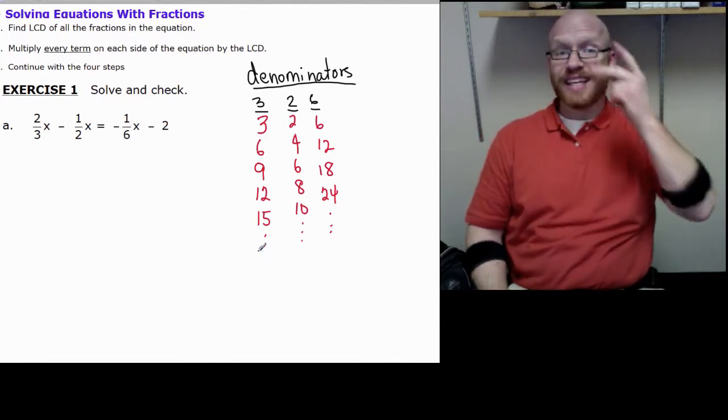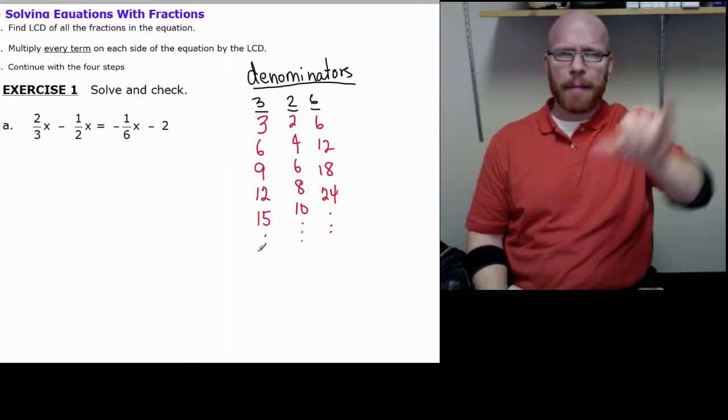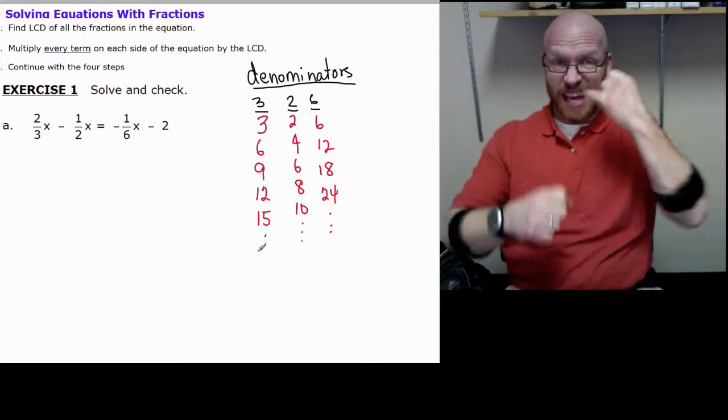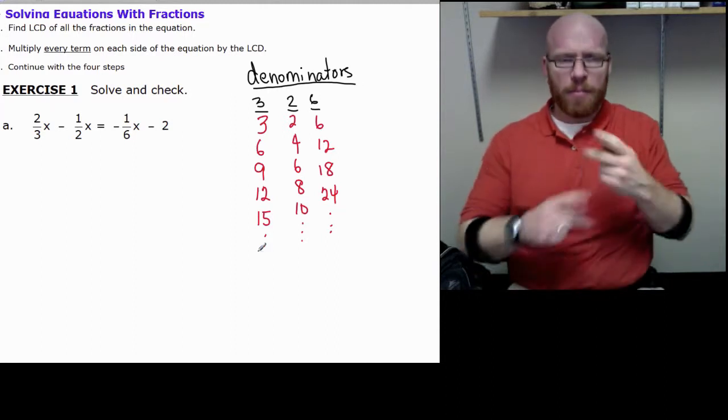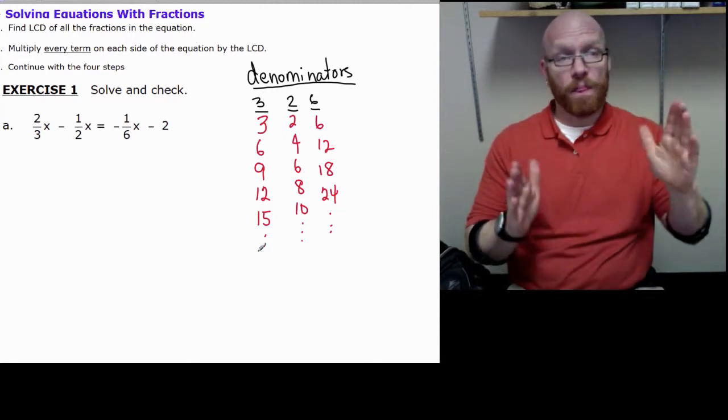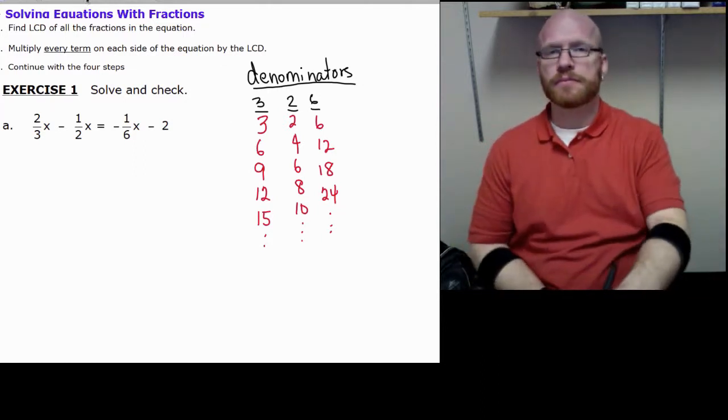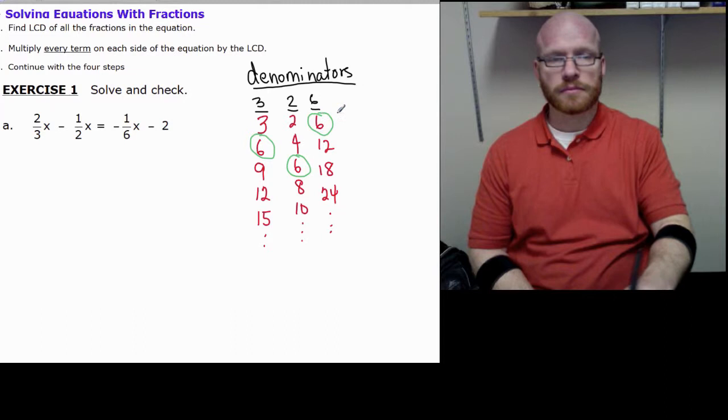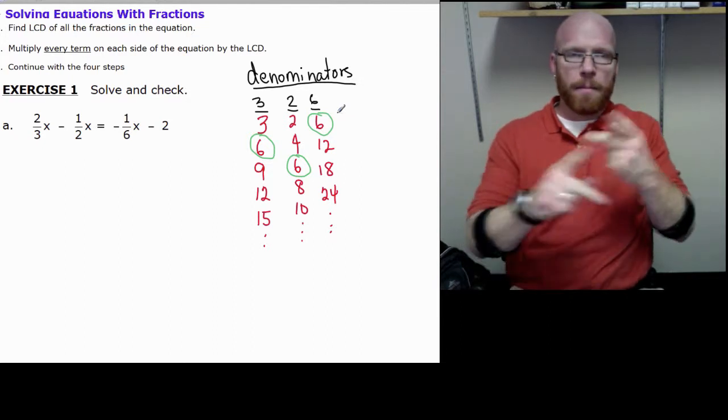Now we can see we have one I can see it's common. I go down I don't see any others, but if the list kept going I would see several common multiples. But the smallest one I see here is 6. That becomes our least common multiple.